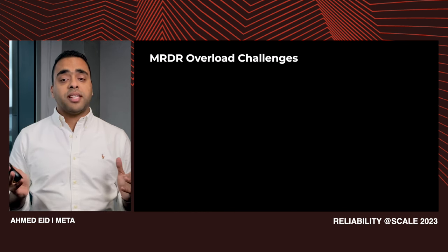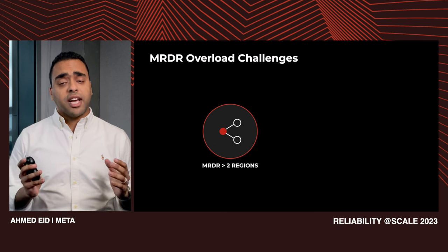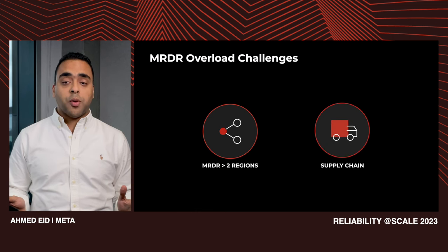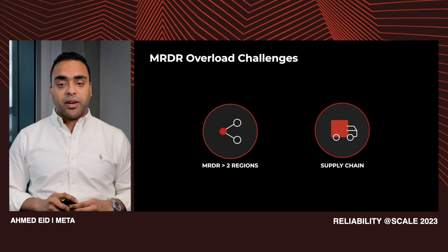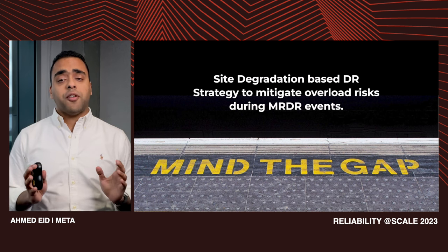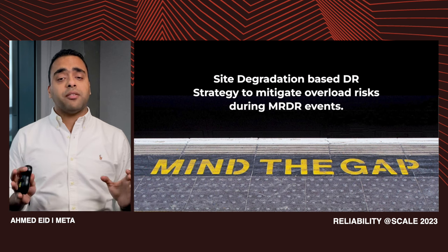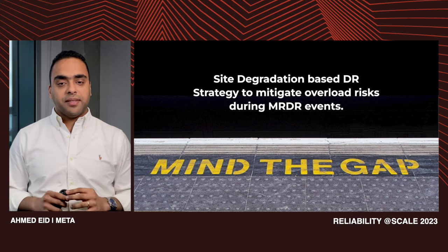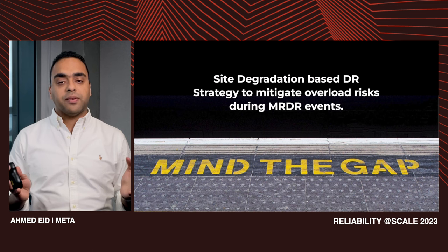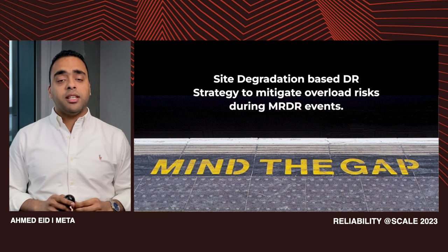We started to ask ourselves: shall we add more capacity as we did for single-region failures? But there were multiple challenges. MRDR events can go beyond two regions down, so adding more capacity is not a scalable solution. Supply chain and capacity crunch problems are another challenge — getting capacity takes time given Meta's infrastructure scale. Based on that, we decided to change our buffer-based DR strategy to a site-degradation-based DR strategy, where every service will degrade gracefully to throttle demand and survive MRDR events.